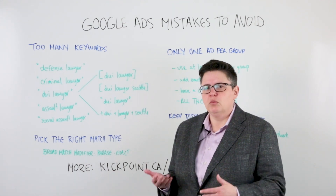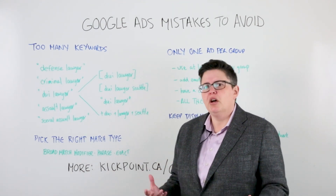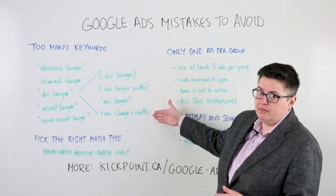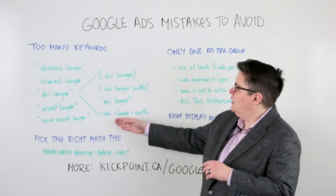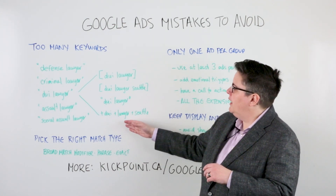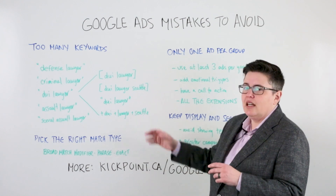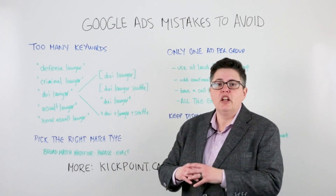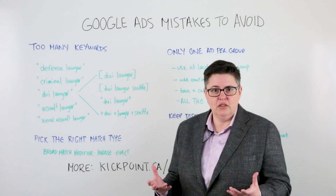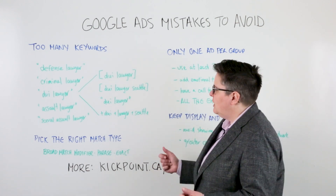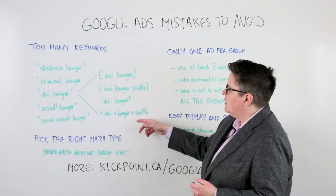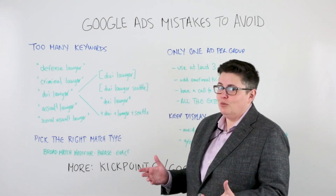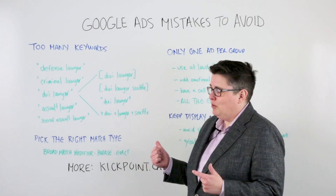The upgrade from that is broad match modifier, or BMM, and that's where the plus signs come in. This means the words +DUI +lawyer +Seattle must all exist in any order, but other words can exist around them. So it could be 'I need a DUI lawyer in Seattle' or 'I live in Seattle, I need a DUI lawyer' — both would work for that keyword.